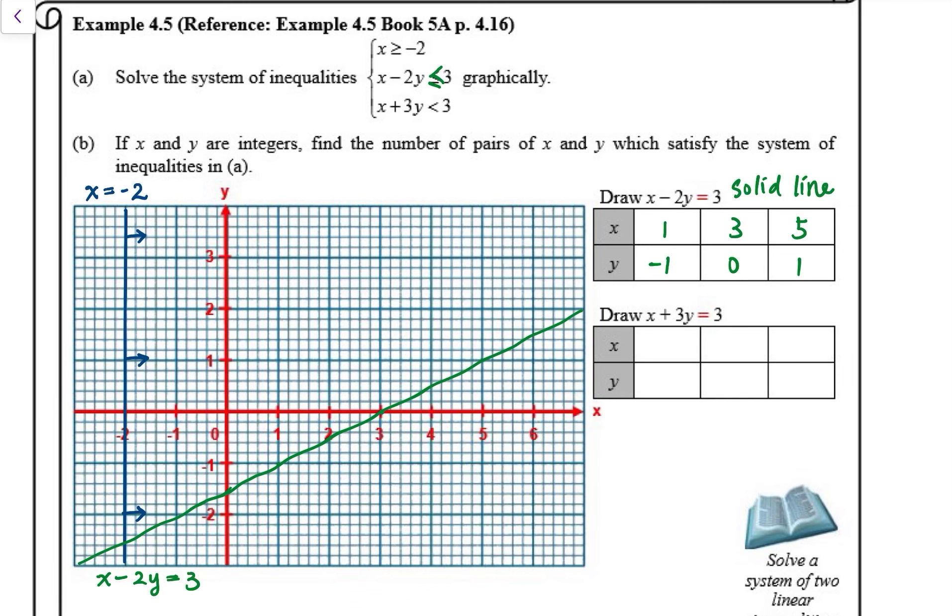Inequality sign is less than or equal to, but the coefficient of y is negative. So we will be shading the upper half plane. So I'm using some arrows to indicate the solution to this inequality.